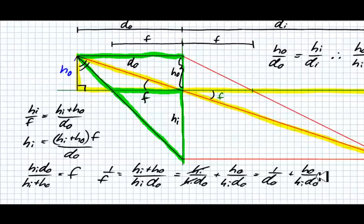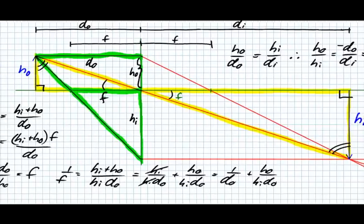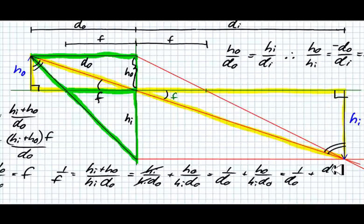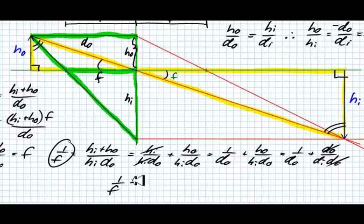But we know from our previous work up here that hO over hI is equal to dO over dI. So we have 1 over dO plus dO over dI dO. The dO's go away, and we're left with 1 over f is equal to 1 over dO plus 1 over dI.